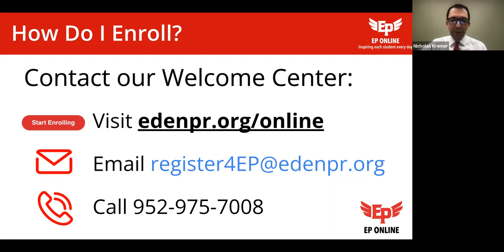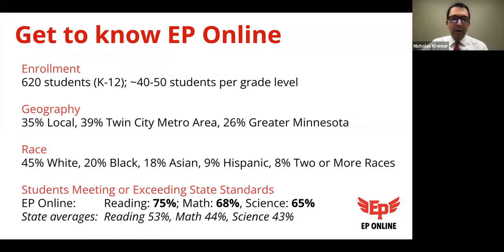If you're interested in enrolling, the information on the screen — website, email, or phone number — will put you in touch with our Welcome Center. This year we have 620 students from kindergarten through 12th grade, pretty evenly distributed at about 40 to 50 students per grade level. About 35% of our kids are local here in Eden Prairie, another 39% come from the greater Twin Cities metro area, and the other 26% come from greater Minnesota.